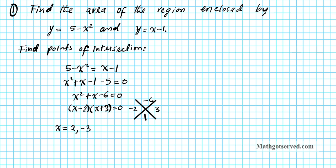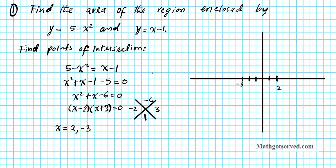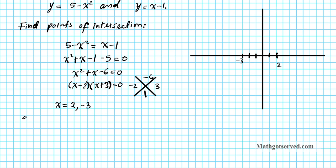We now have an idea of what the domain of our graph looks like. Let's set up our coordinate system with a y-axis and x-axis, marking 2 to the right and negative 3 to the left. Let's graph y equals x minus 1 first. This is a line, so we just need the slope and y-intercept.